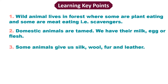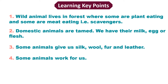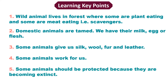Third, some animals give us silk, wool, fur, and leather. From the silkworm we get silk; from the crocodile, goat, snake we get leather; and from the sheep we get wool or fur. Fourth, some animals work for us — for heavy work we use the elephant, donkey, horse, or ox as work animals, and they are very useful for us.